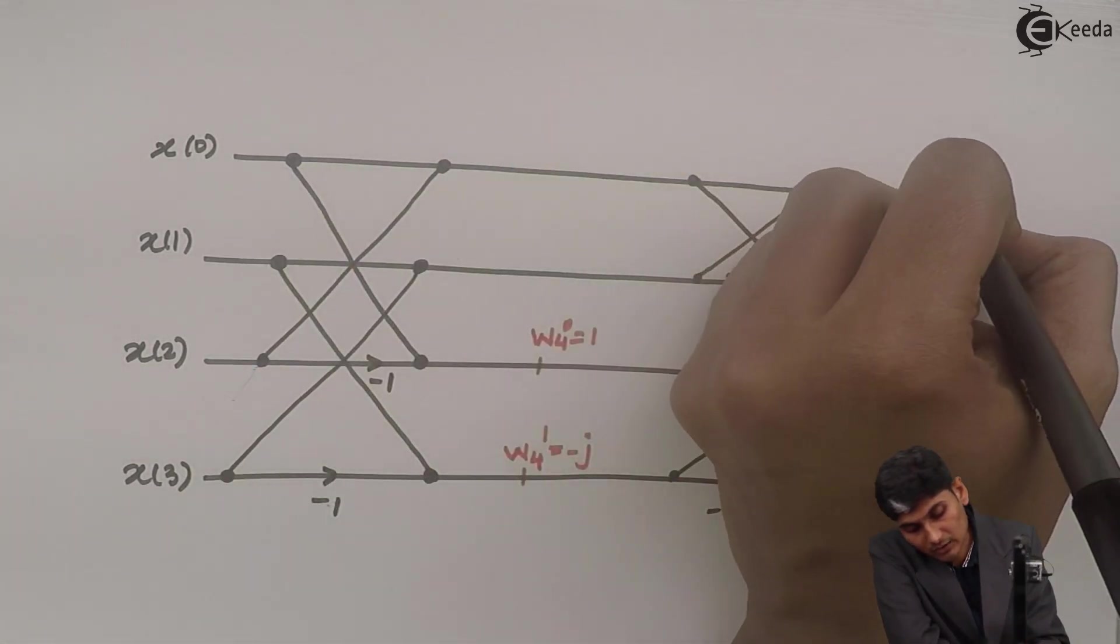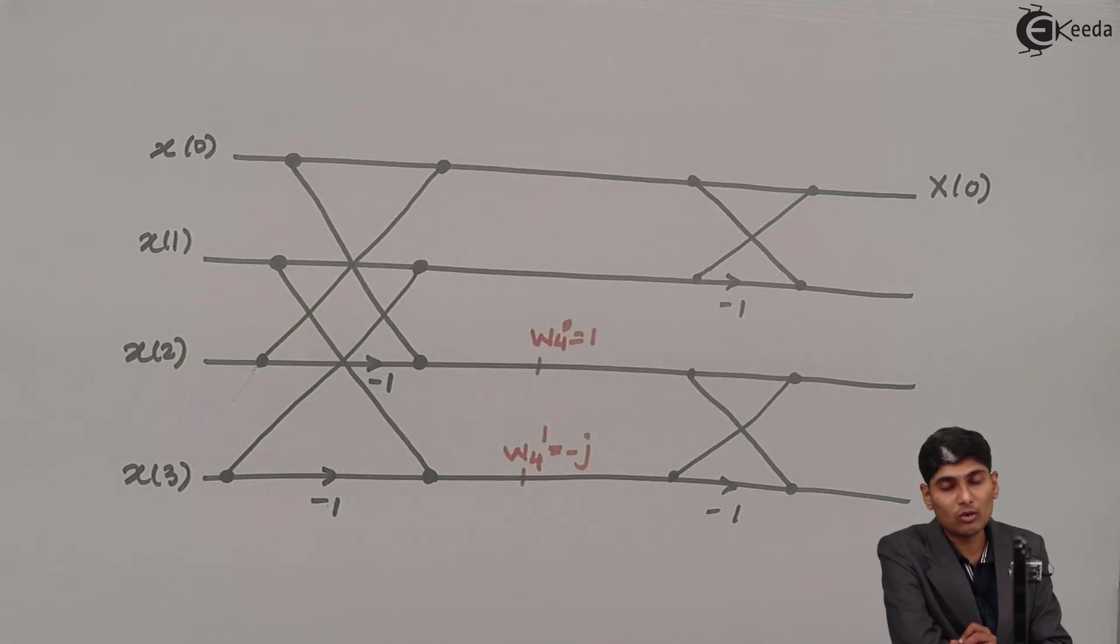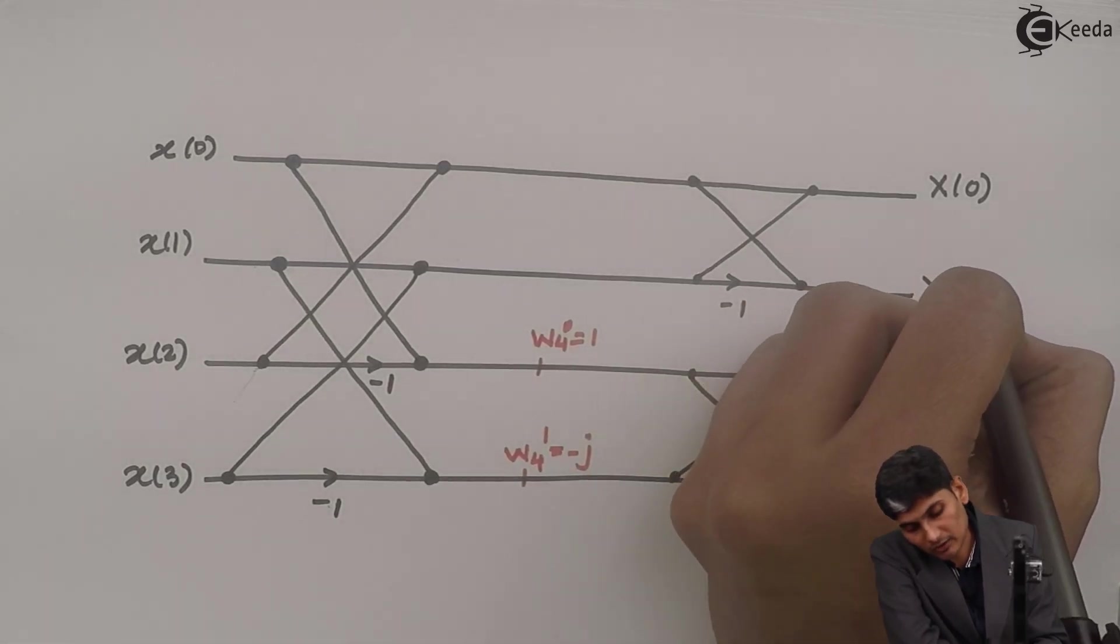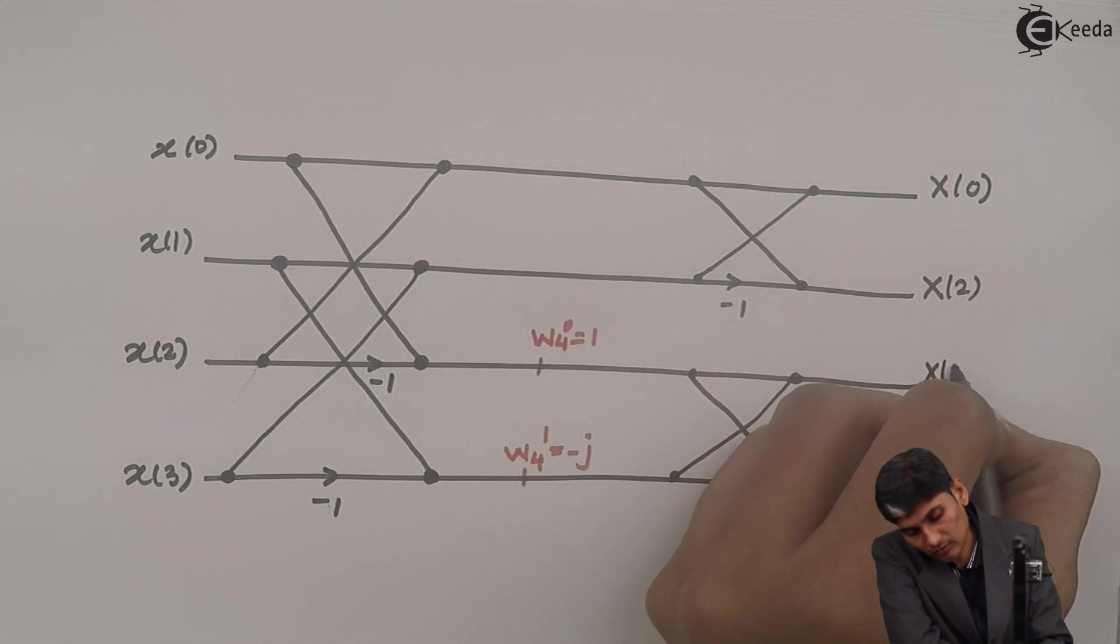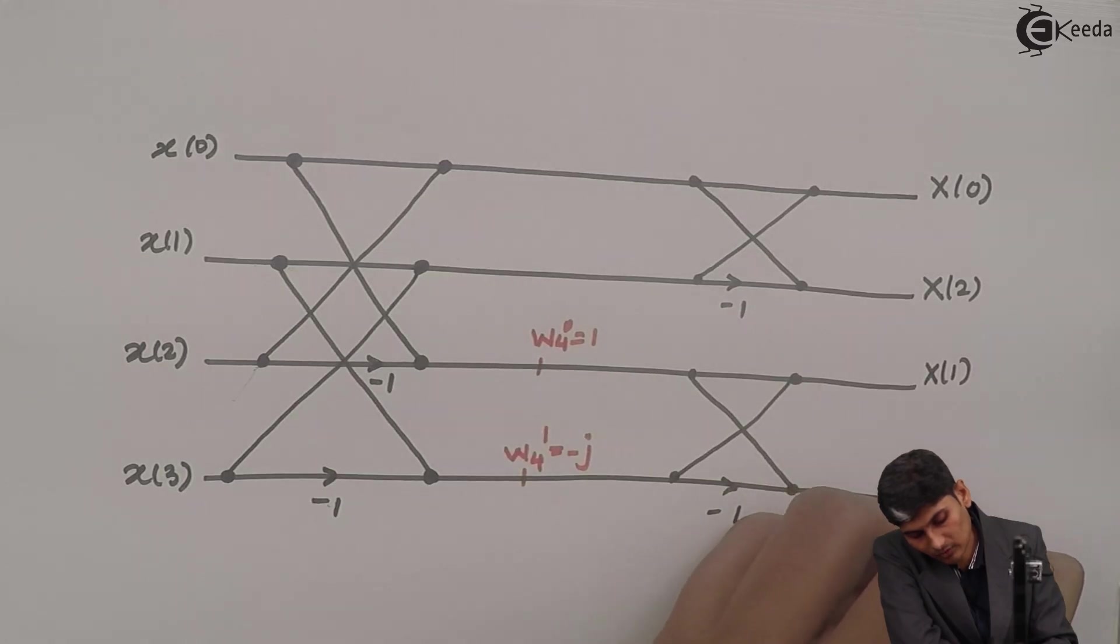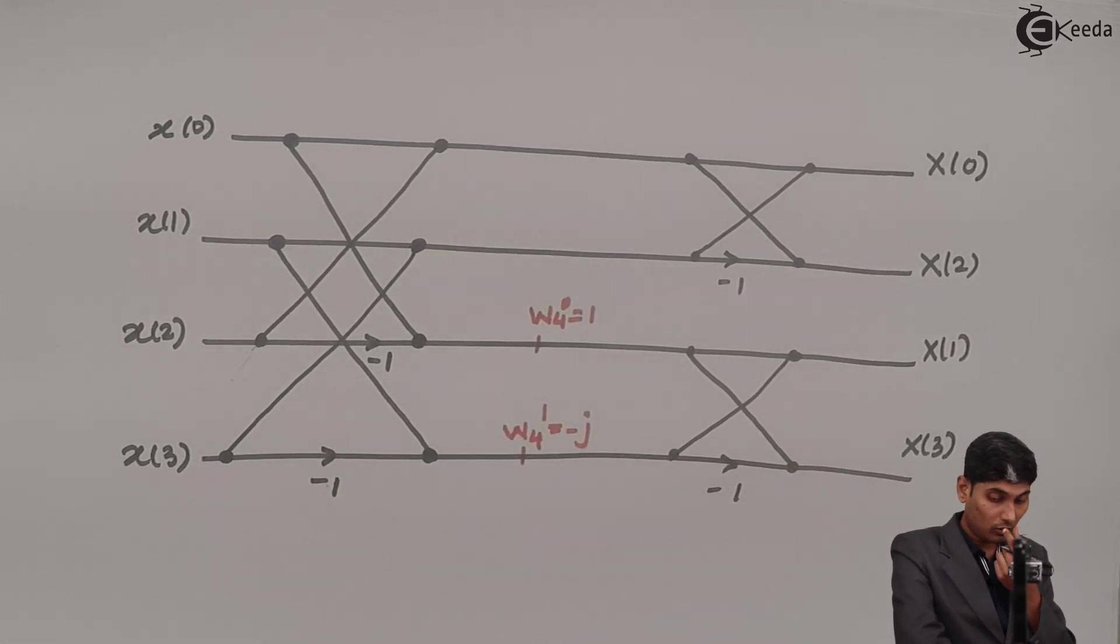But when I write x of k, I should be maintaining the even odd parts. So x of 0 and x of 2, x of 1 and x of 3. So this is what the 4 point DIF FFT graph looks like.